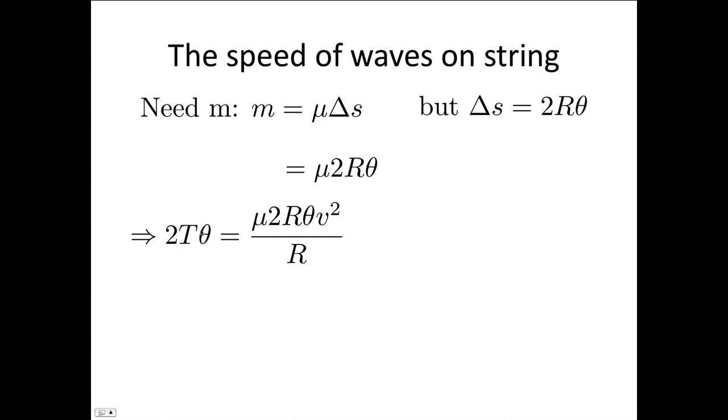So now we're just going to substitute that in. Here's our resultant force, 2T theta, and here's the mv squared over r term, where m has been replaced with this expression. Now there's lots of things we can cancel out: the thetas, the 2s, and the rs. When we do that, we're left with the expression T equals mu times the velocity squared. So we can rearrange that to write that the velocity equals the square root of the tension over the mass per unit length.